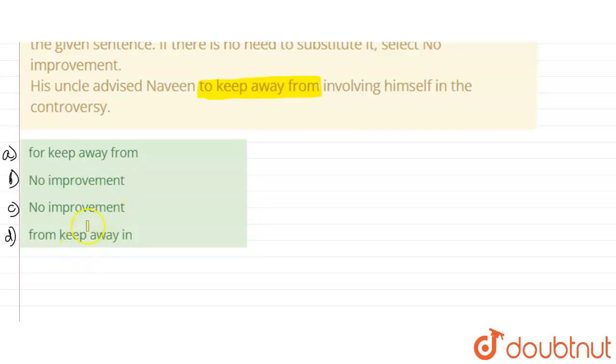From keep away in - his uncle advised Naveen from keep away in involving. Keep away in involving is a grammatical error. From keep away to keep away from.